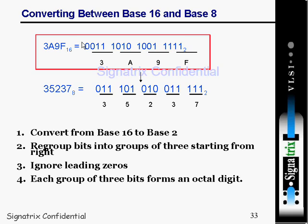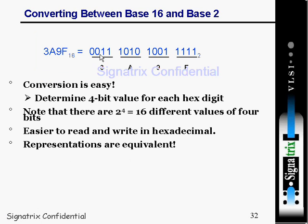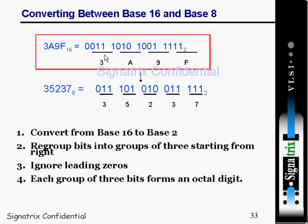We have seen how to convert base 16 to base 2. Now it is time to see how to convert base 16 to base 8. You are given a hexadecimal number and you want to convert that hexadecimal number into an octal number. So first, you take the input — a hexadecimal number.